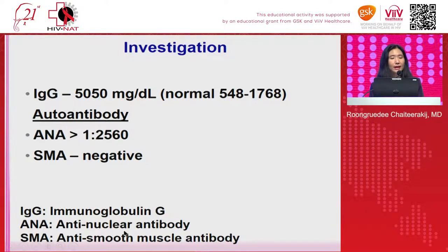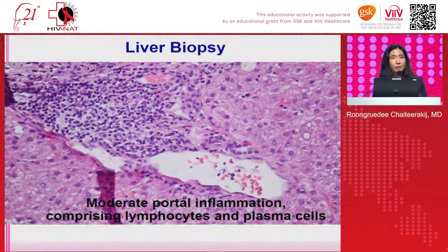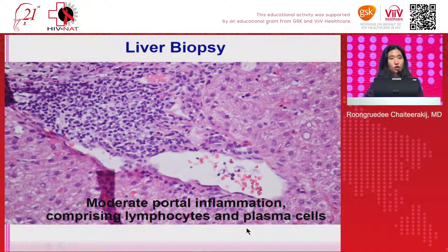She tested positive for ANA — anti-nuclear antibody — at a very high titer. Another autoantibody we tested was anti-smooth muscle antibody, which is commonly used for diagnosis of autoimmune hepatitis. It turned out to be negative. But because the IgG was very high and ANA was positive at high titer, we thought this patient might have autoimmune hepatitis. We did a liver biopsy, and it showed that in the portal tract area there was moderate inflammation, with lymphocytes and plasma cells, which is characteristic of autoimmune hepatitis.